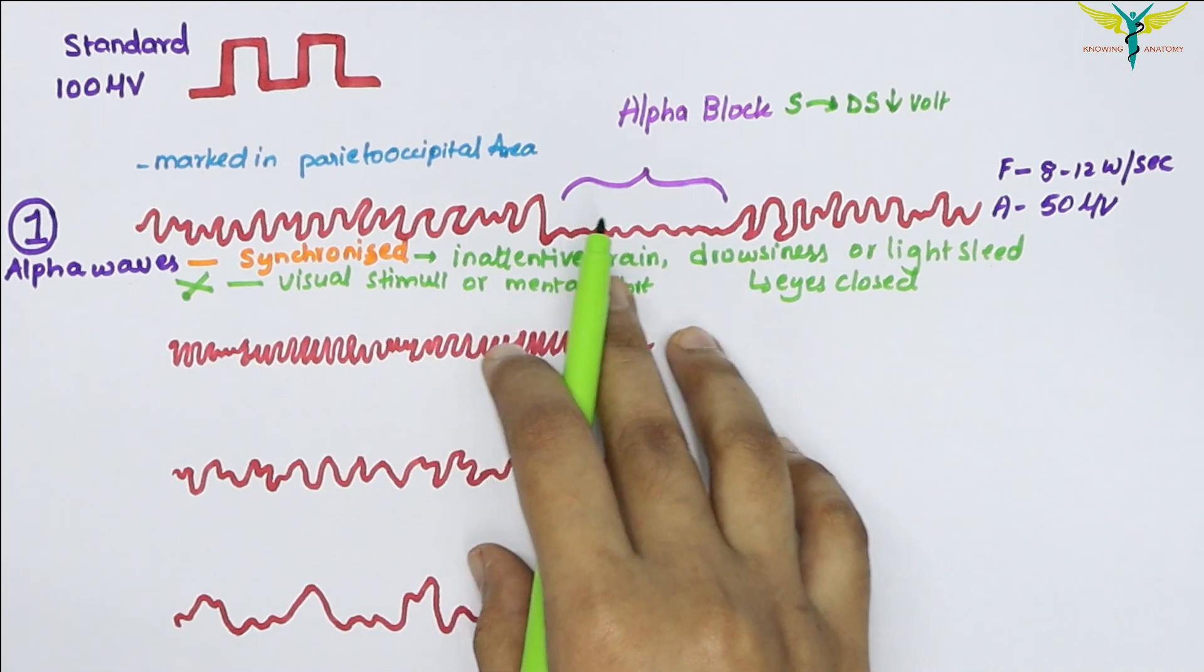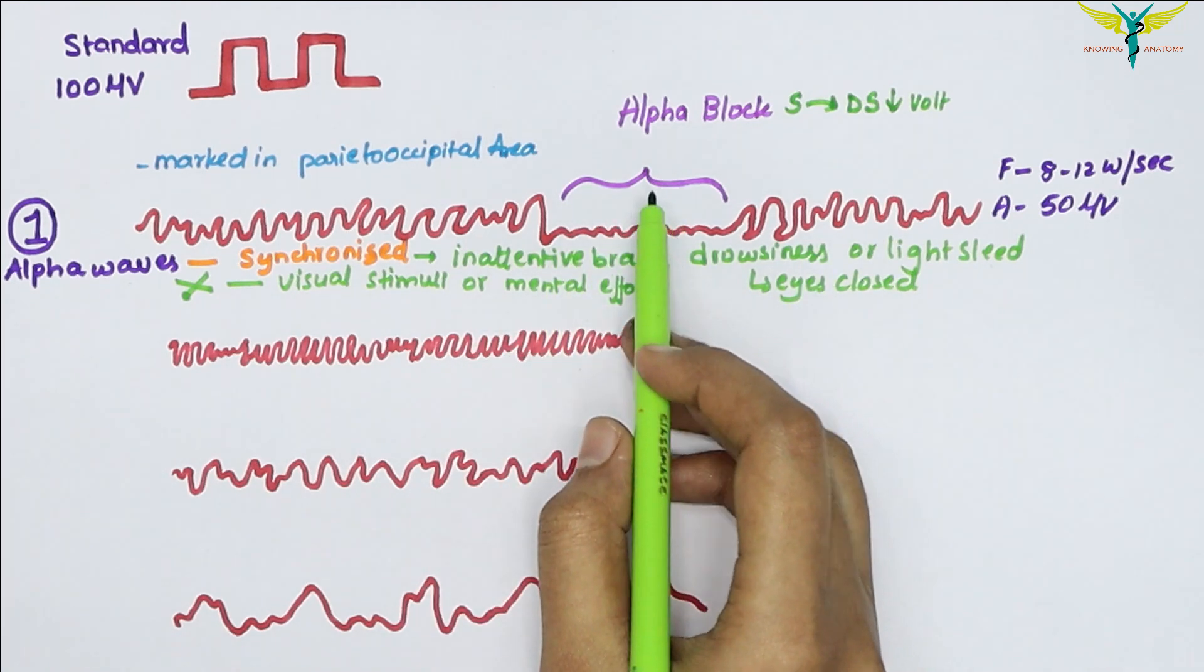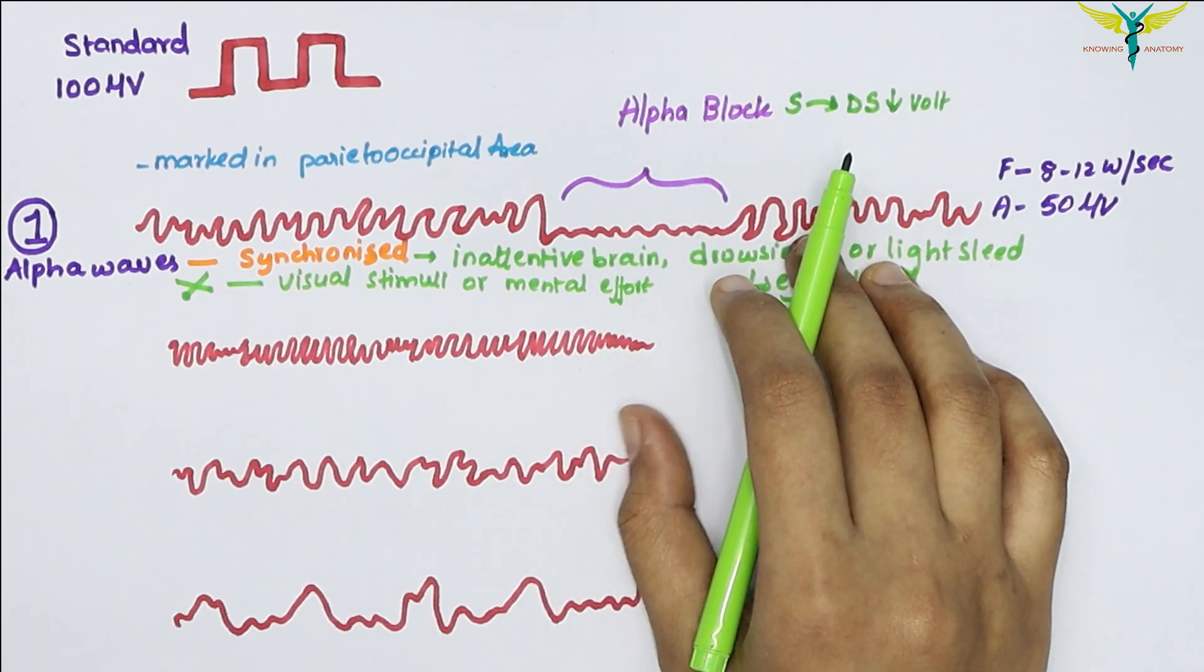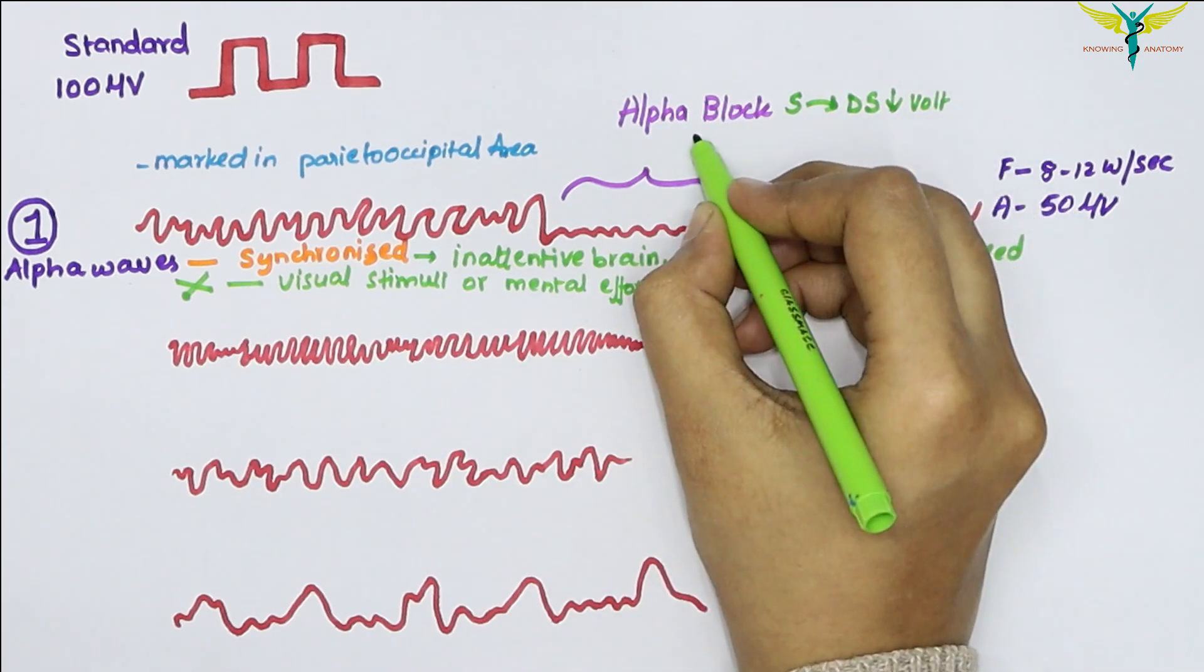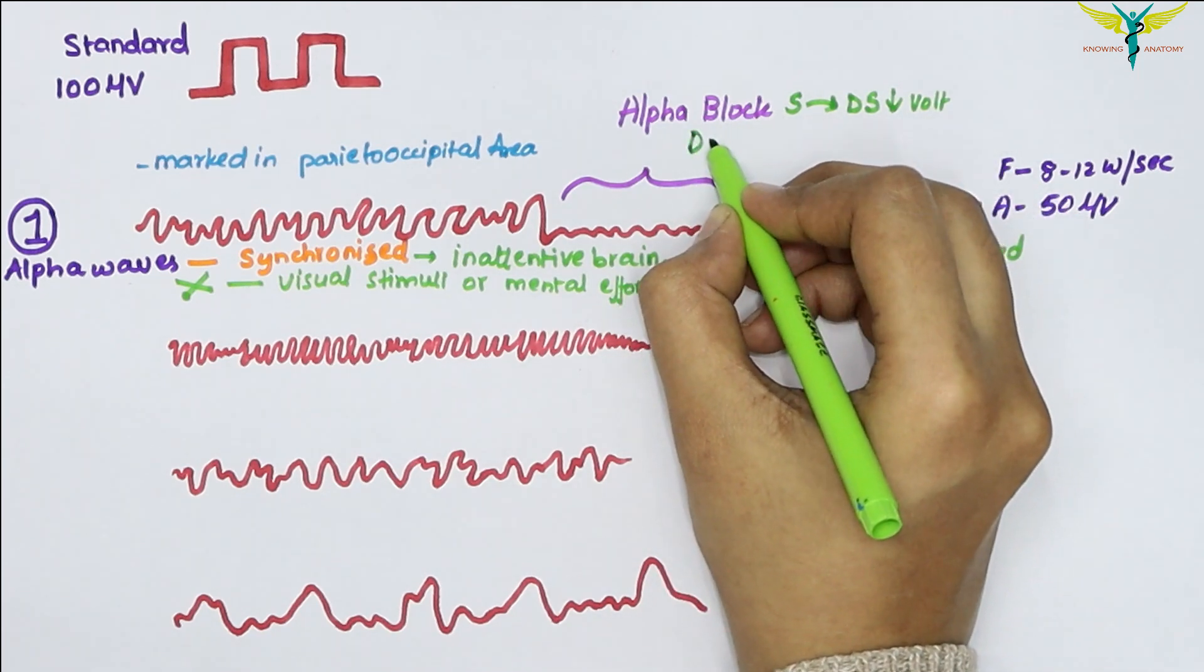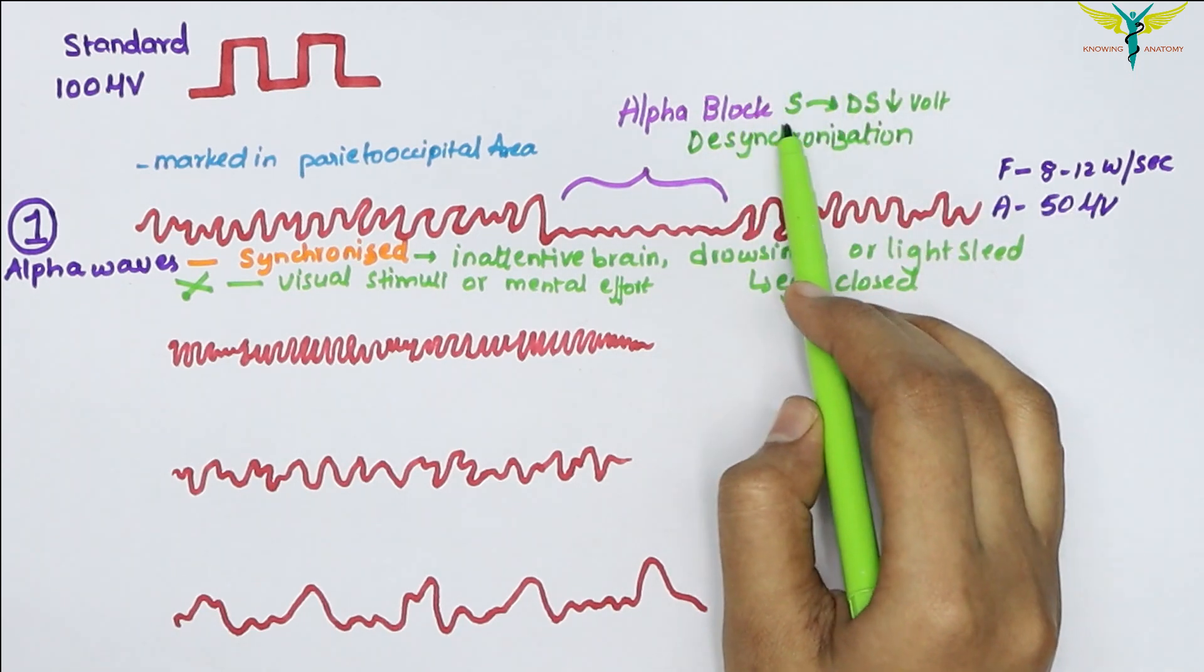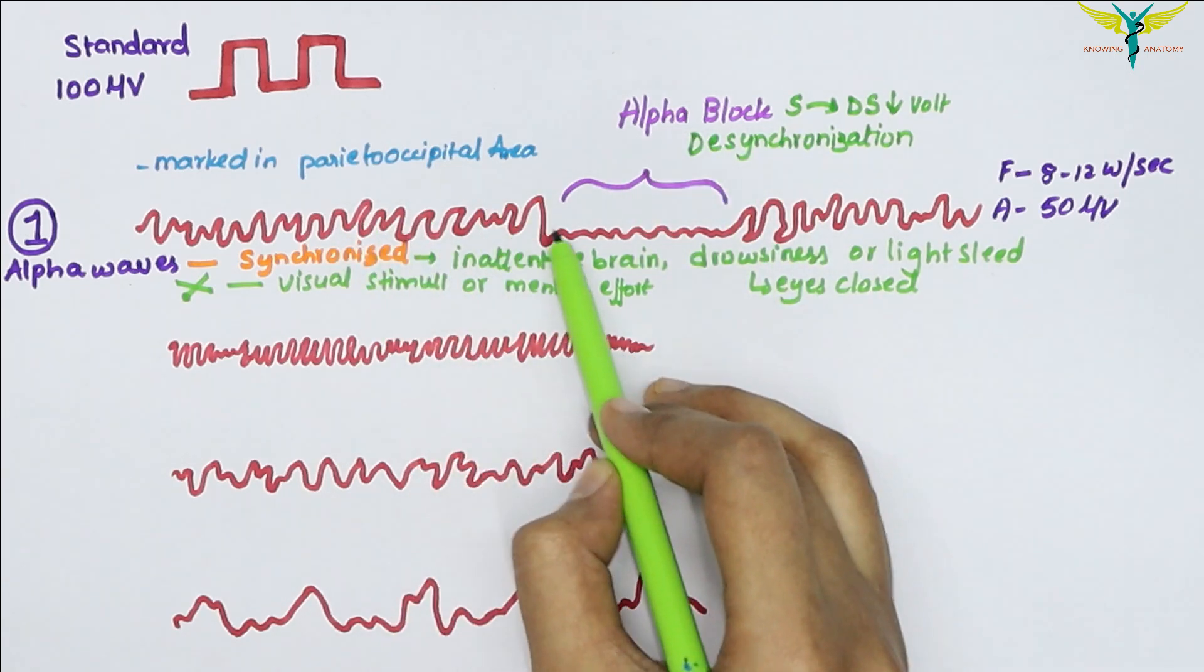Desynchronization is the common term used for the replacement of regular alpha waves with irregular low voltage waves. So the alpha block is caused by desynchronization, and it is due to the loss of synchronized activity in the neural elements that are responsible for the regular wave pattern.